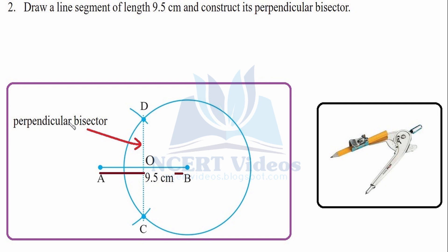The perpendicular bisector divides AB into AO and OB equally. That was the required answer, and this is how you construct your perpendicular bisector.